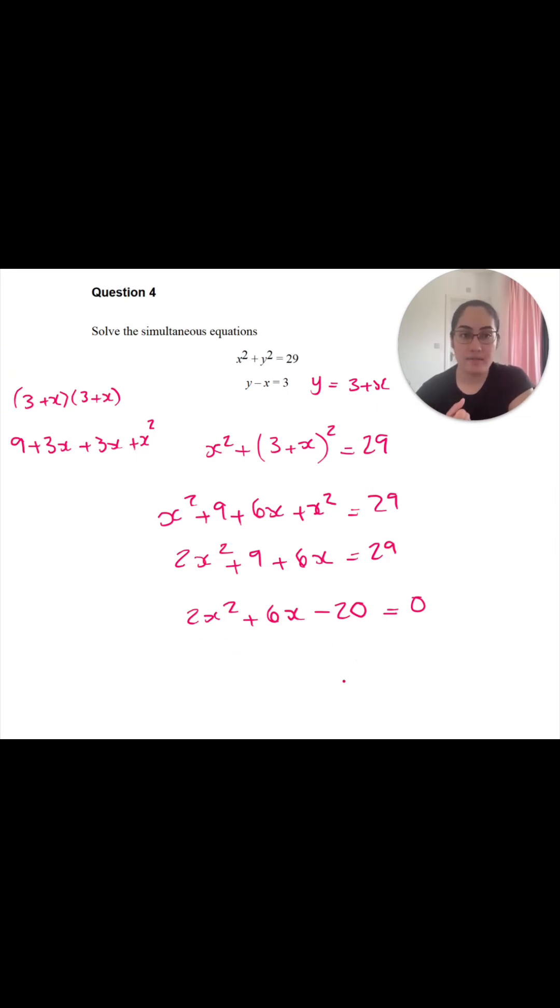I'm going to factorize to find the value of x, but before factorizing, I'm going to simplify it because 2 is a factor to all of these numbers. So I'm going to divide by 2 and I'm going to get x squared plus 3x minus 10 is equal to 0. And now I can use the double brackets to factorize this.